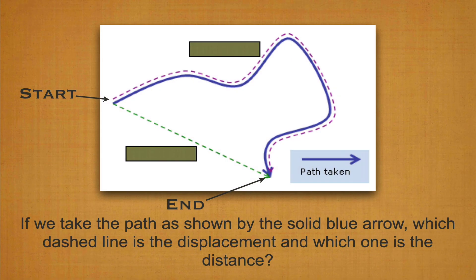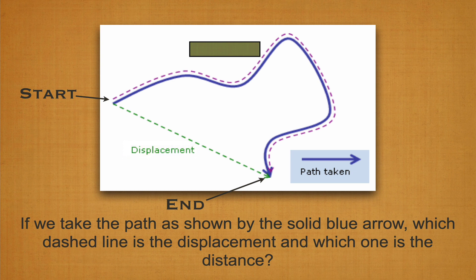Here's a qualitative example. We take the path shown by the solid blue arrow. We want to know which of two arrows represents distance and which represents displacement. Distance is how far you've gone, and displacement is your change in position. So the green dashed arrow represents the displacement, and the purple dashed arrow represents the distance. You can see they're very different from each other.